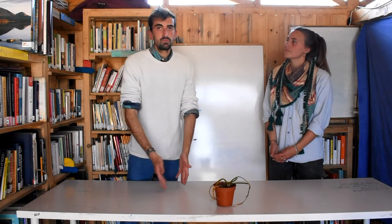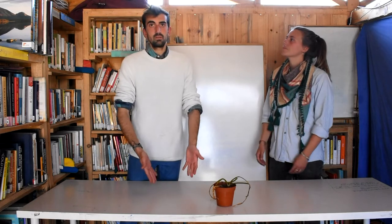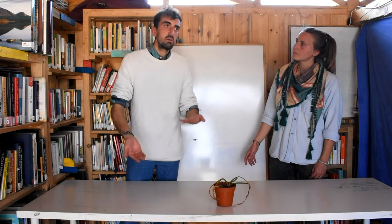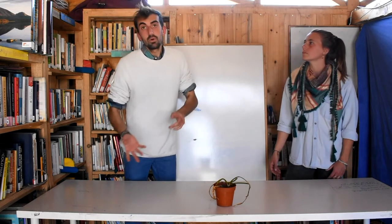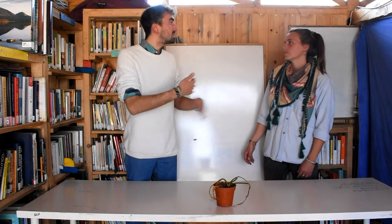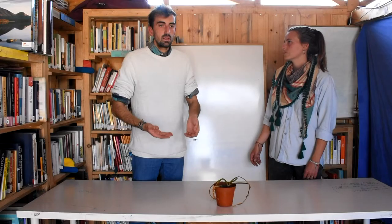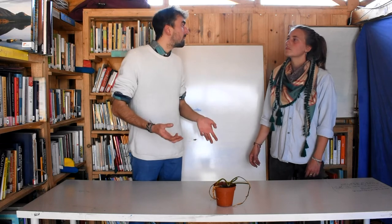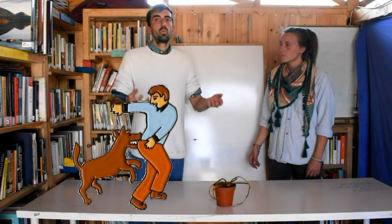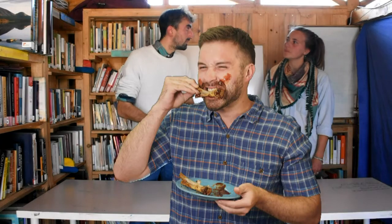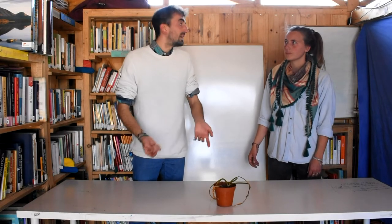For example, a virus from a monkey can jump to a person quite easily. From a dog to a person it can jump. From one species to another, they can jump in a lot of different ways — when you get bitten by an animal, when you eat the meat of an animal, or when you play with the animal.